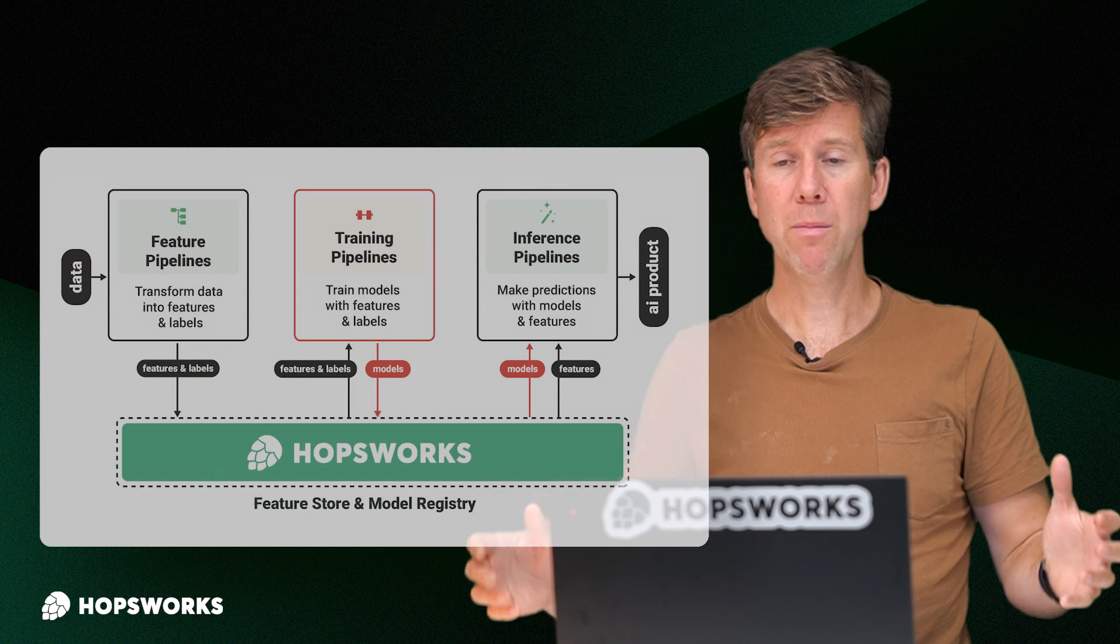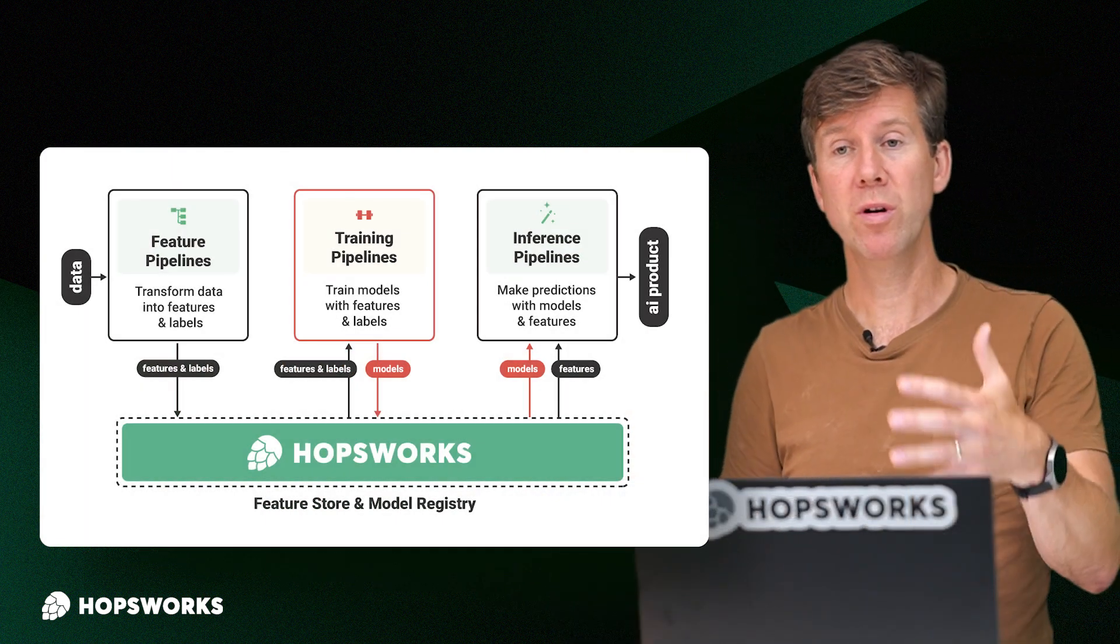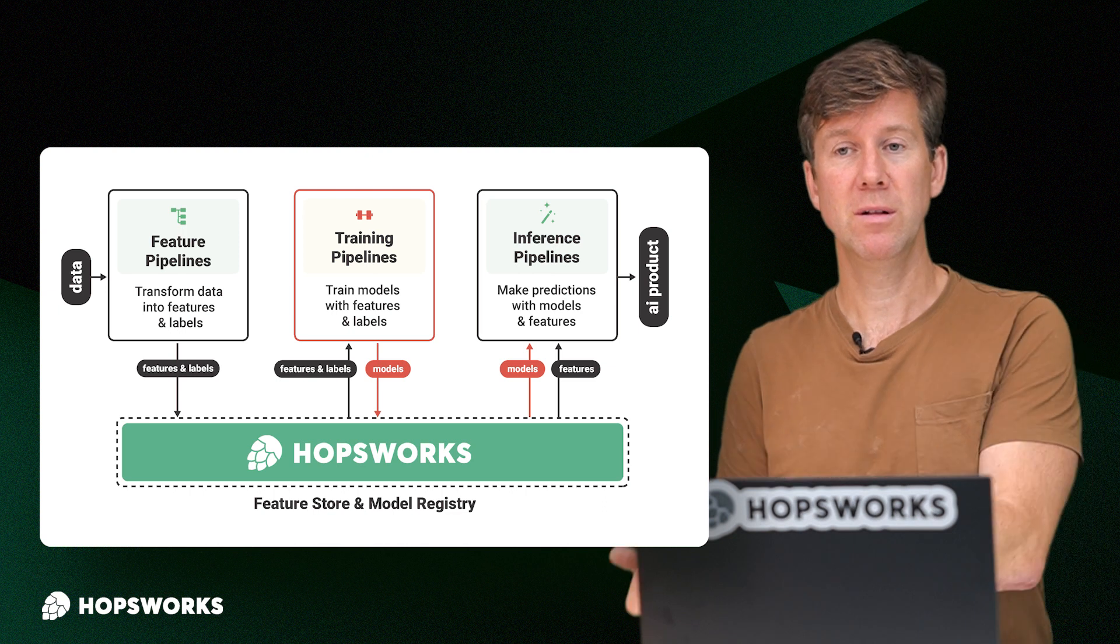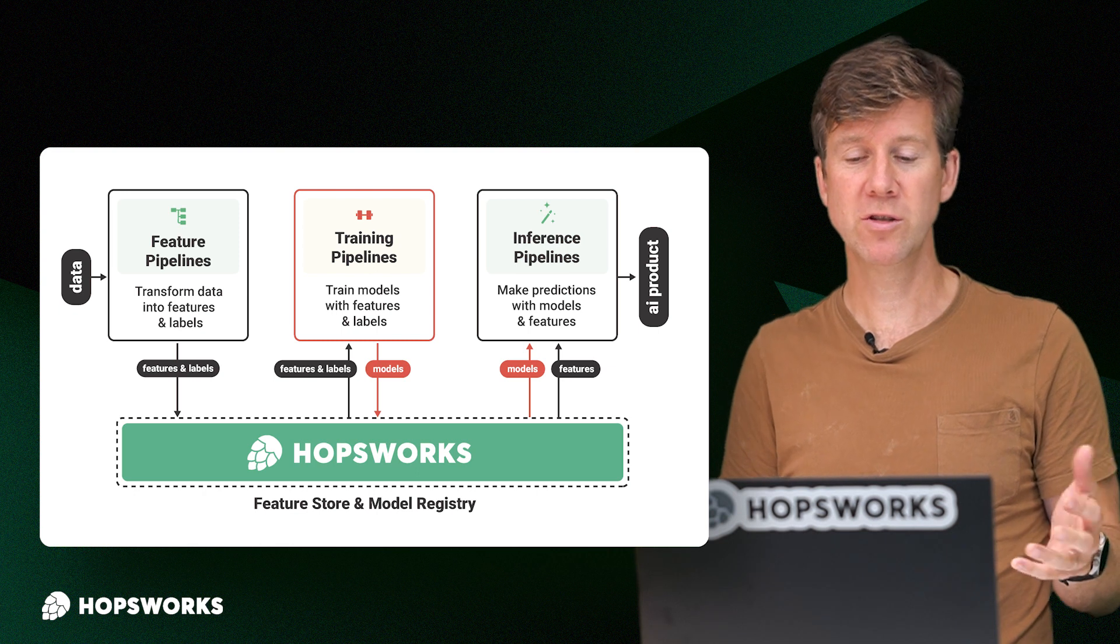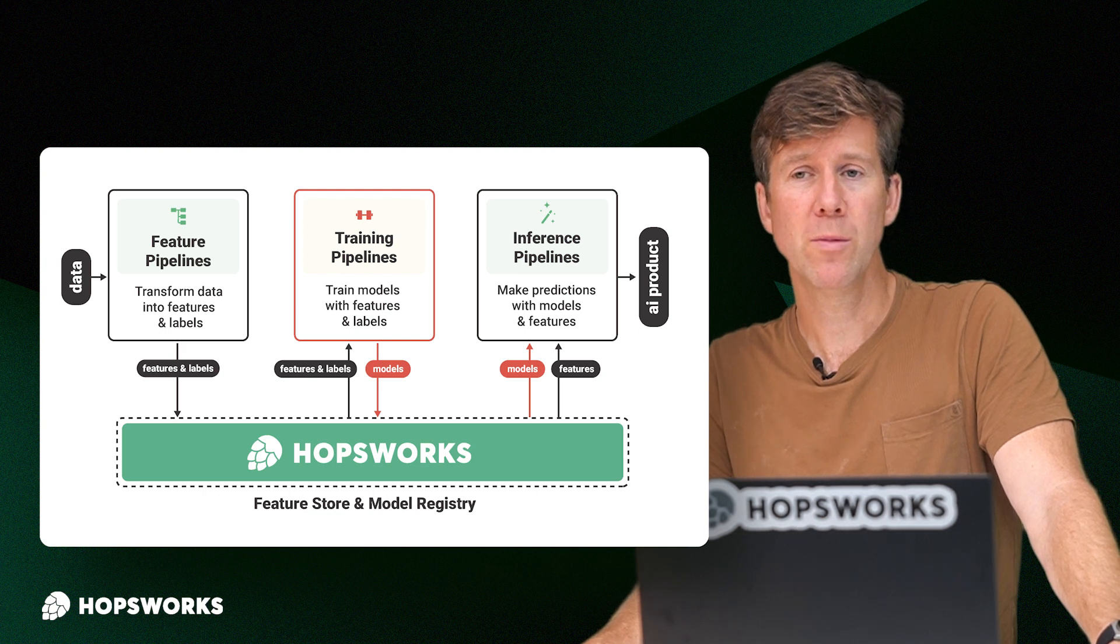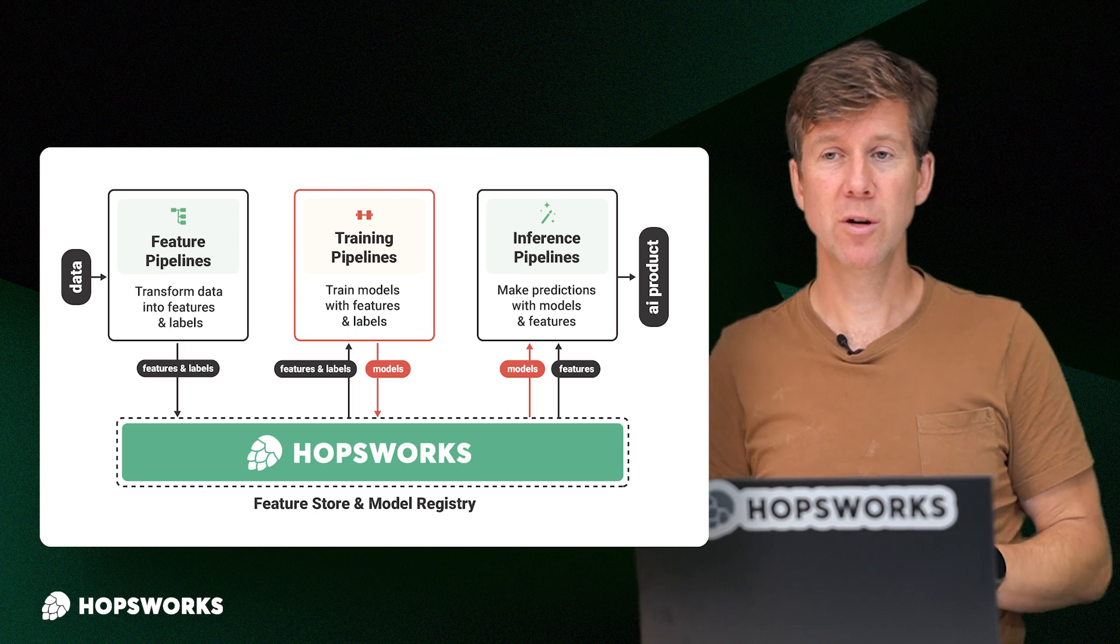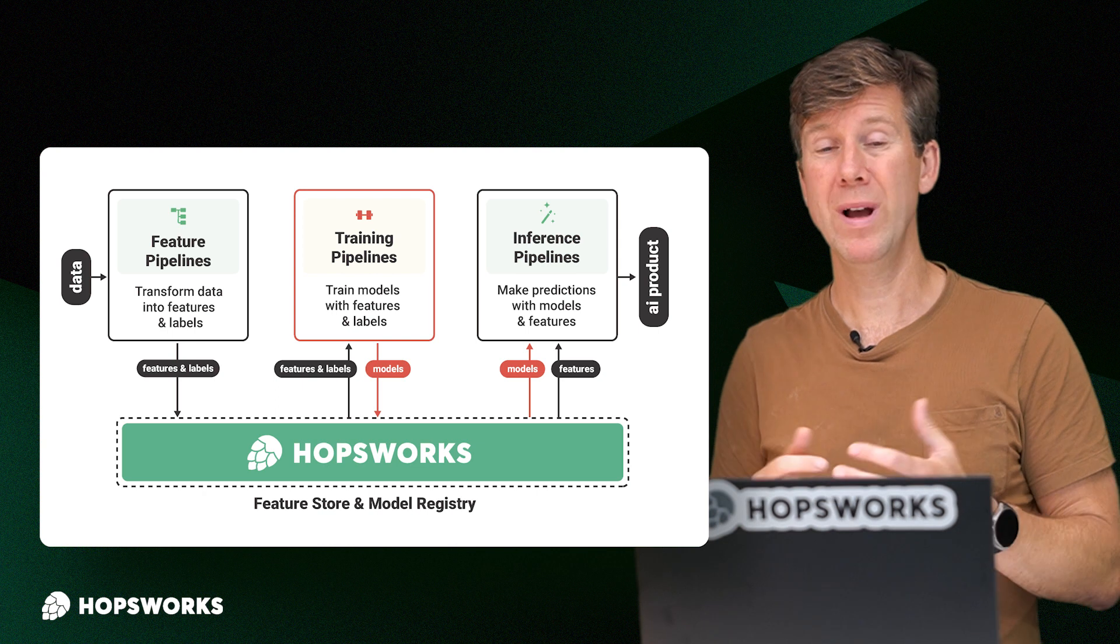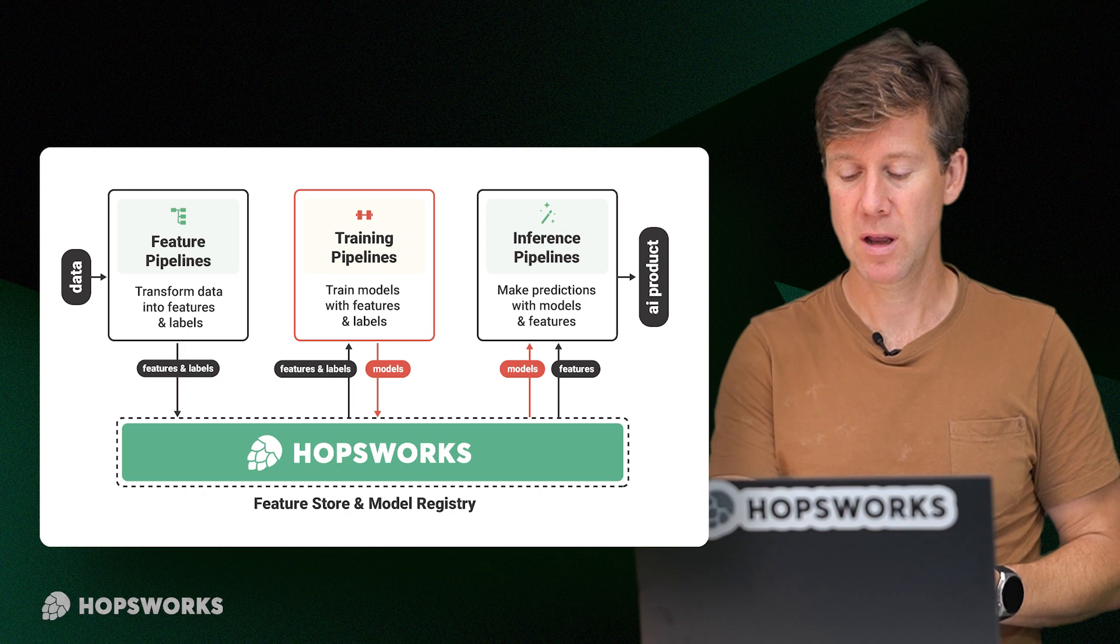So Hopsworks, our platform brings all of these pipelines together. As I said already, the feature pipelines output, its features and labels can be stored in Hopsworks. The training pipeline can read from Hopsworks to get the features and labels and create the models and save them back to Hopsworks, if you like to use our registry. If you use MLflow, that's totally fine. And then your inference pipeline, whether it's a batch program or an online inference program, can read the model from the model registry, read the features from Hopsworks that are pre-computed. And any features created on demand through user request information, they can be computed in Python functions that are managed again by Hopsworks.